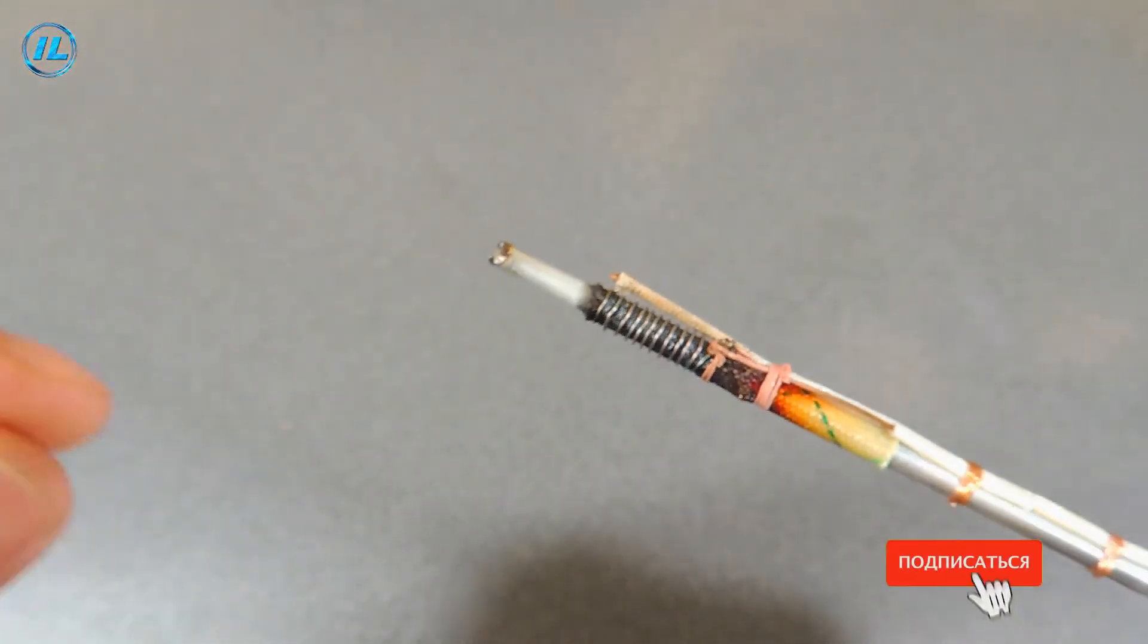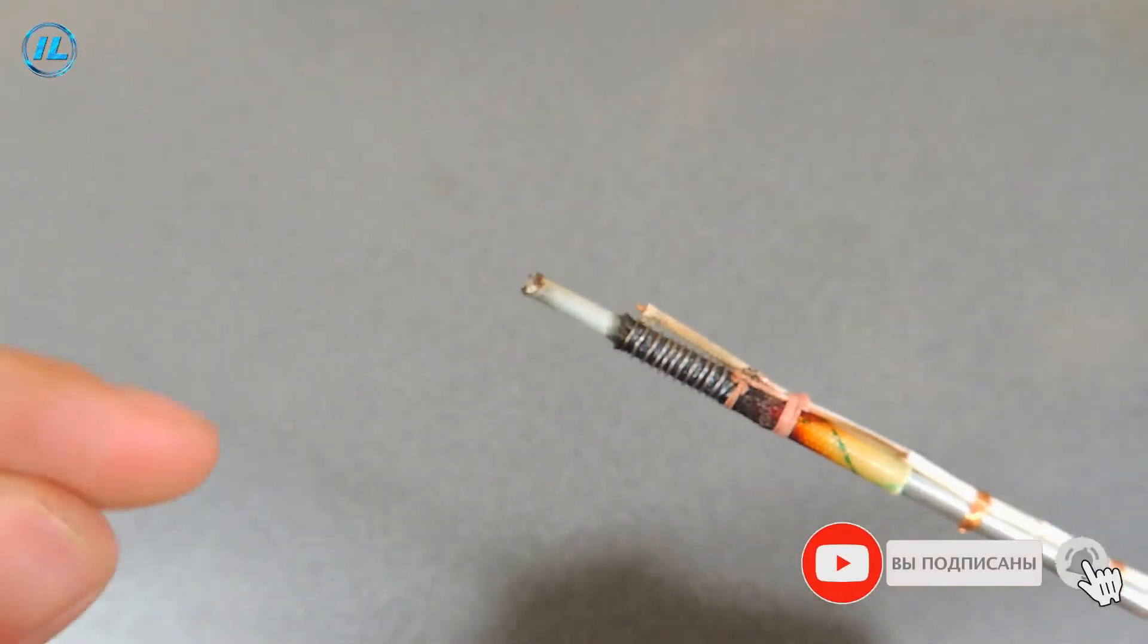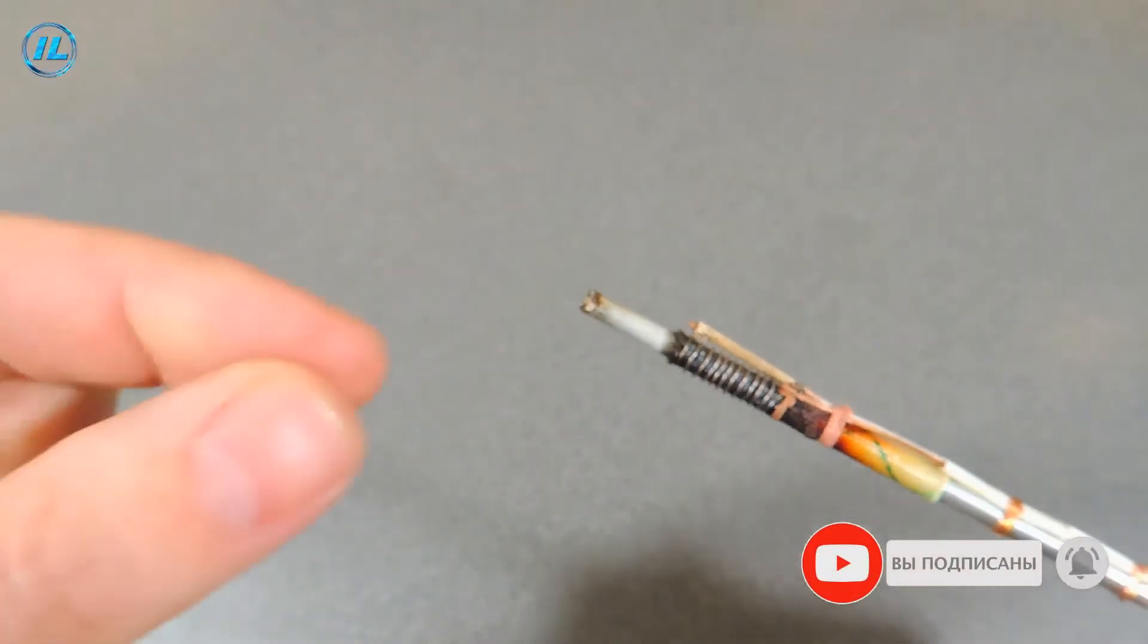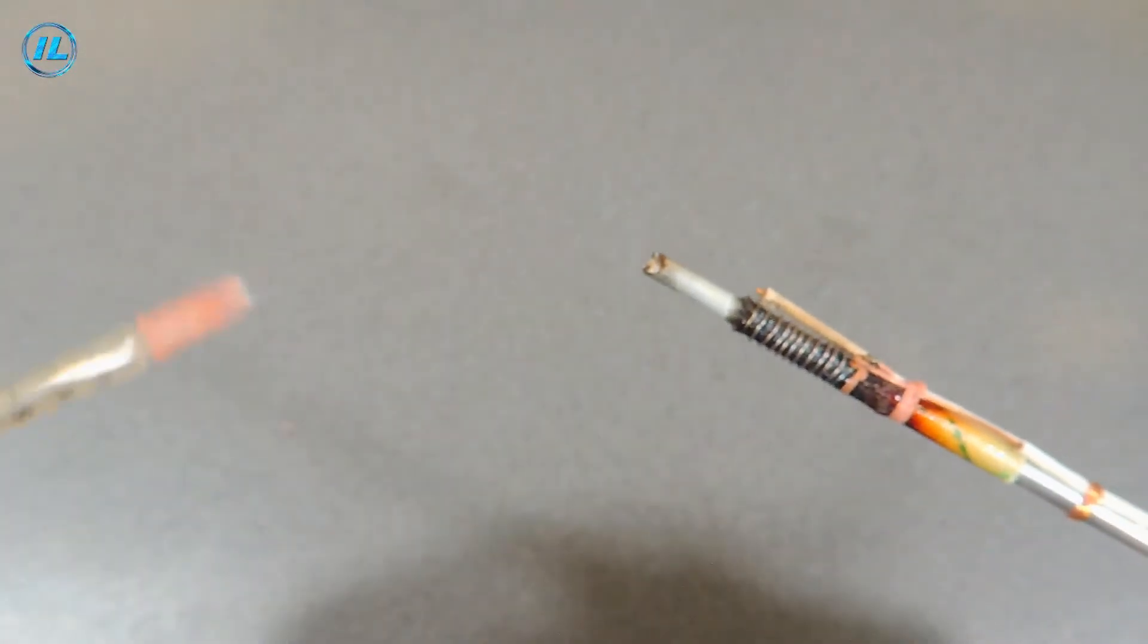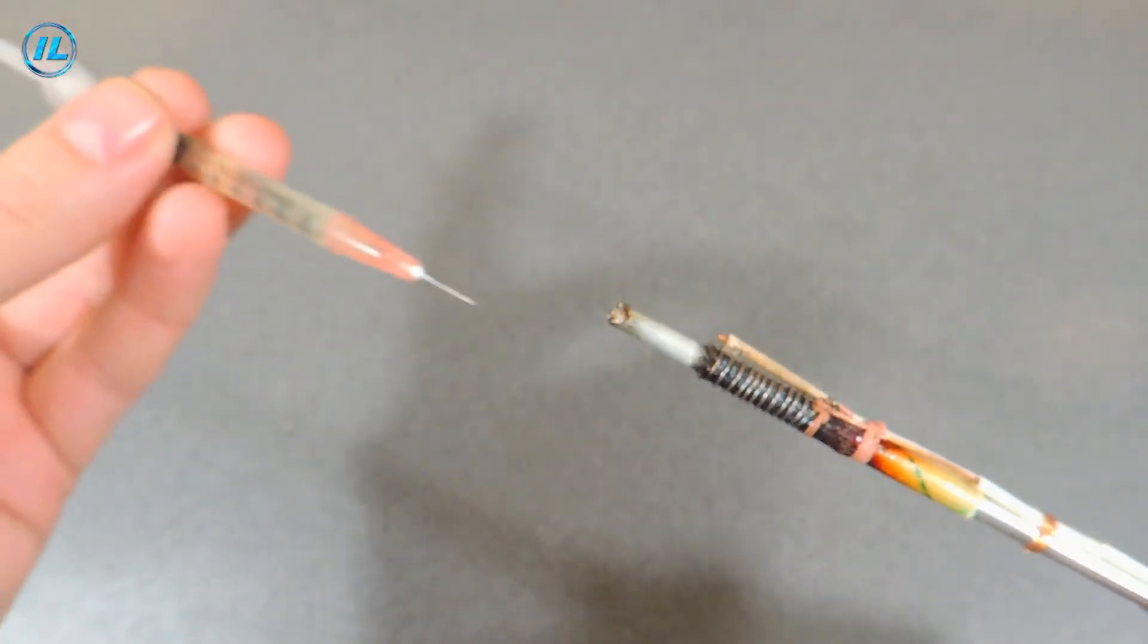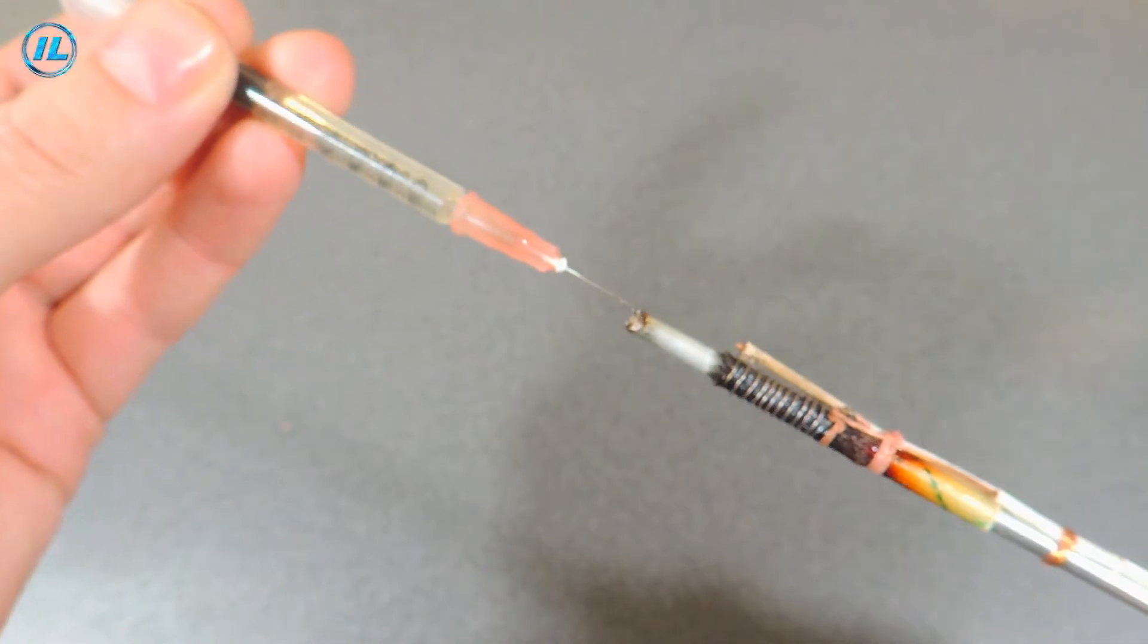As you can see, the soldering iron works great. The only problem is that the rod doesn't get tinned. But this is easy to fix. It is enough to take a little soldering acid and drop it onto the tip of the soldering iron.